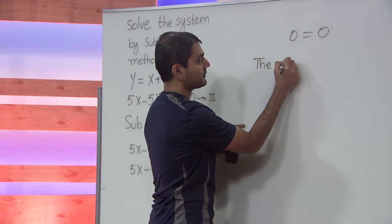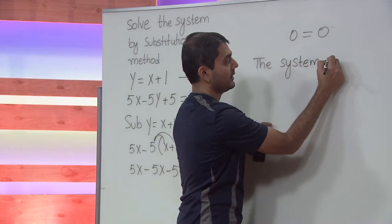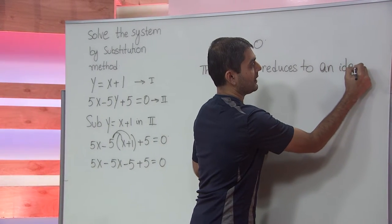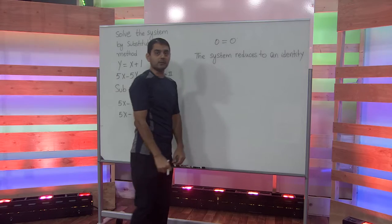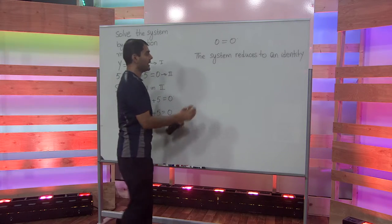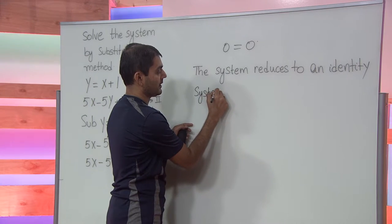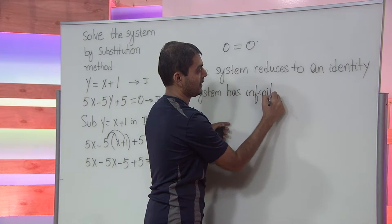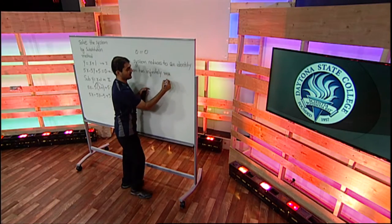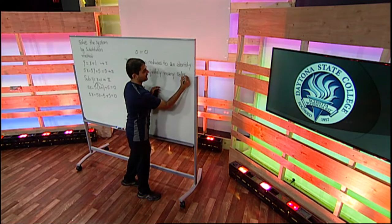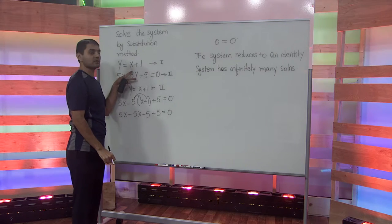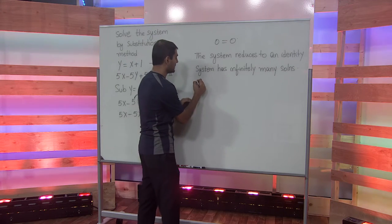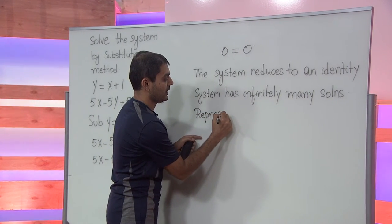This system reduces to an identity. When the system reduces to an identity, the system has infinitely many solutions. These two equations represent two lines. When the two lines are coinciding, the system reduces to an identity. Hence, this system represents coinciding lines.